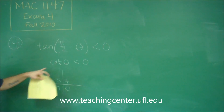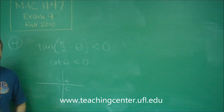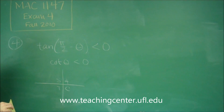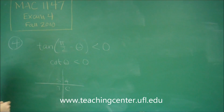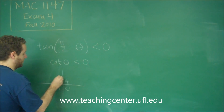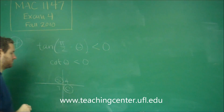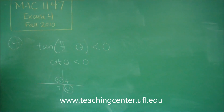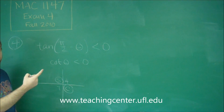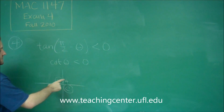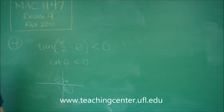Cotangent is a reciprocal of tangent, but it follows the same positive and negative conventions. So if cotangent of theta is negative, we could only be in quadrants two or four, because tangent and cotangent would be positive in quadrants one and three.